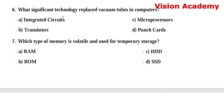Question number 6: What significant technology replaced vacuum tubes in computers? Option A: integrated circuits. Option B: transistors. Option C: microprocessors. Option D: punch cards. Option B, transistors, is the right answer.